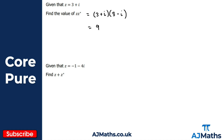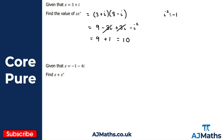Expanding using FOIL: three times three gives nine; three times minus i gives minus three i; i times three gives positive three i; i times minus i gives minus i squared. Simplifying: nine, the minus three i and plus three i cancel, leaving minus i squared.